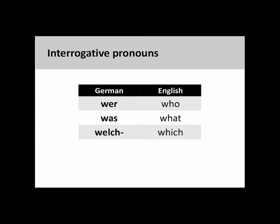There are different types of interrogative words. Interrogative pronouns can be used to ask questions about the identity of a noun. For example, 'wer' (who), 'was' (what), and 'welch-' (which) are interrogative pronouns. The endings for 'welch-' are determined by the case and gender of the noun it modifies. We will look at how to add these endings in a later presentation.